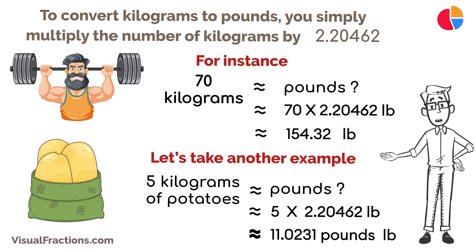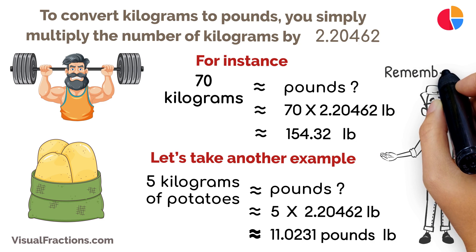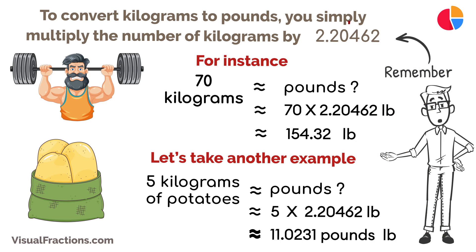And that's it. Converting kilograms to pounds is straightforward. Remember, 1 kilogram equals approximately 2.20462 pounds. With a little practice, you'll become adept at this conversion, allowing you to navigate through various weight measurements with ease.